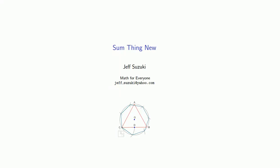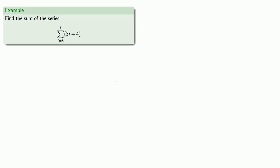Since a series is an ordered sum, we can try to find the sum of the series. For example, suppose I want to find the sum of the series i goes from 3 to 7 of 3i plus 4.